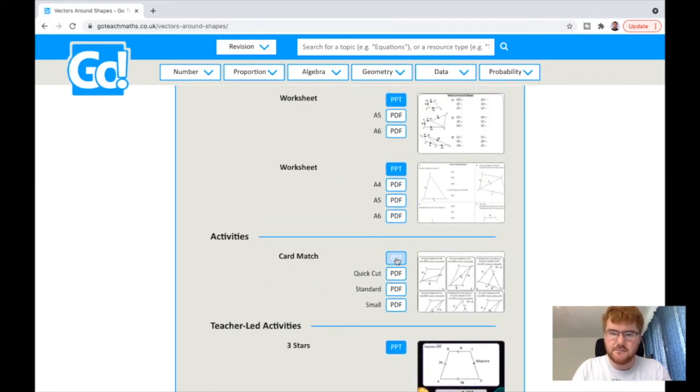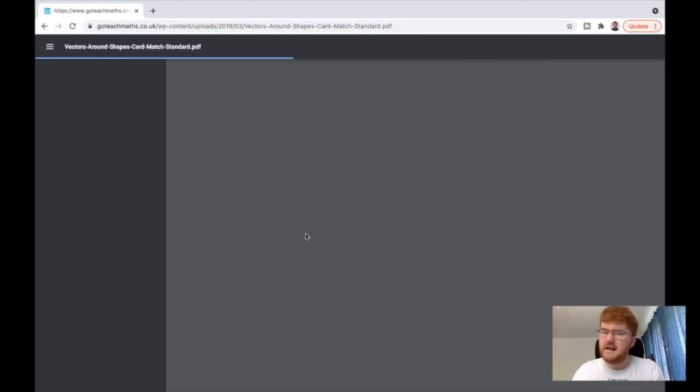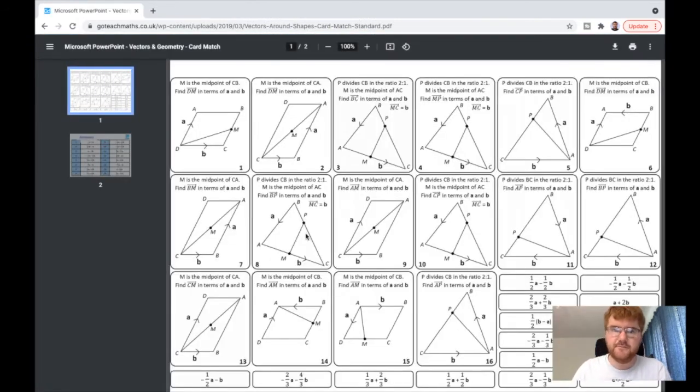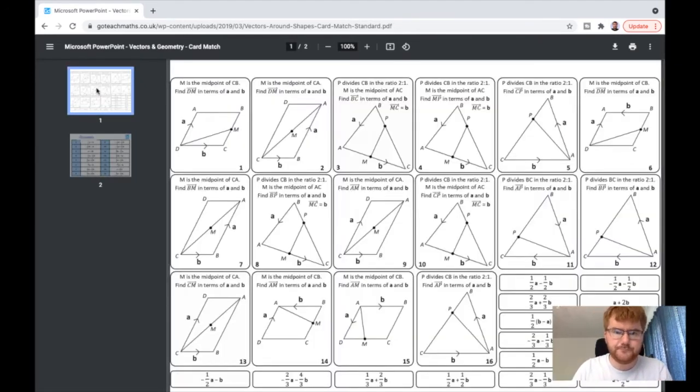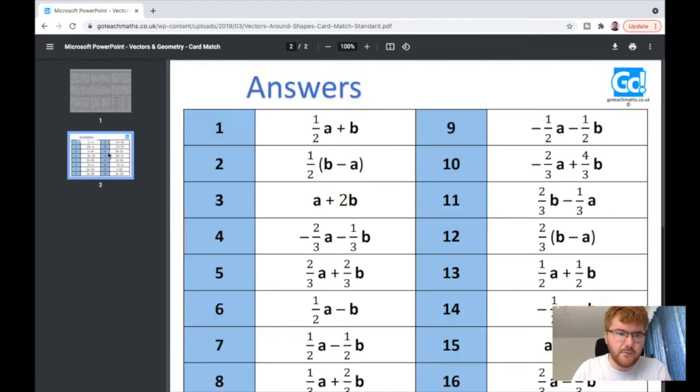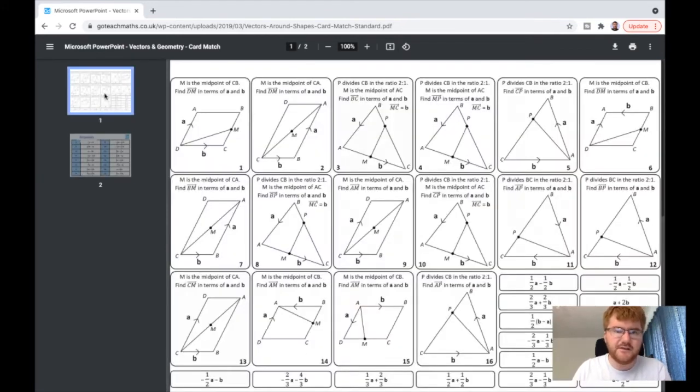Let's choose an activity. Let's choose the card match activity. Let's click on standard. You'll see what generates up here is a card match activity where you have the question on vectors, and then you've got to connect it up with the correct answer. You'll see the answers there of which number, so number one, for example, matches up with a half a plus b. That's a really nice activity. You can print this out and then connect the question and the correct answer to the question is there given to you as well.